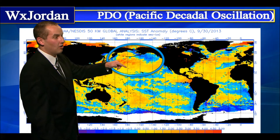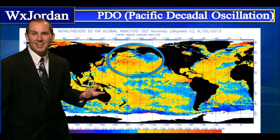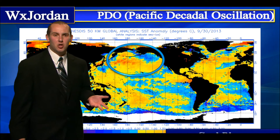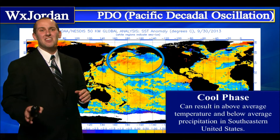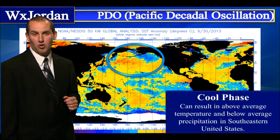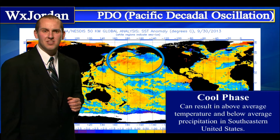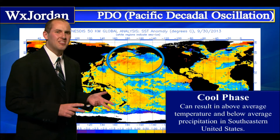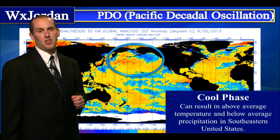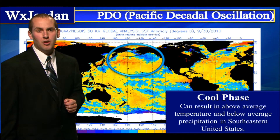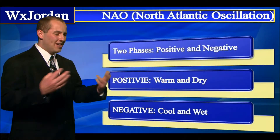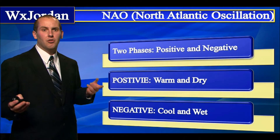Maybe the Pacific Decadal Oscillation — let's look at it. Well, it's in a cool phase. That is not favorable for us to see a lot of snow here in the Southeast. But the good news is, it's not one of the major players, so we need to look somewhere else.